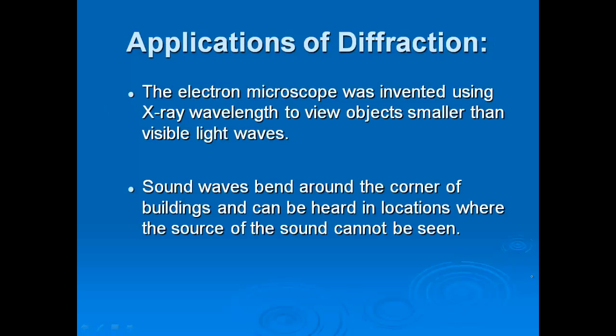Here are some examples of diffraction. The electron microscope was invented using x-ray wavelength to view objects smaller than visible light waves. Sound waves bend around corners. You don't have to be in line of a sound in order to hear a sound. Sometimes the bouncing of the waves, the reflection of the waves, can make the sound seem to jump around, like an echo.